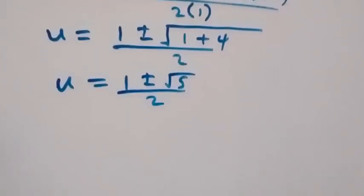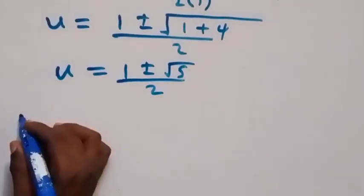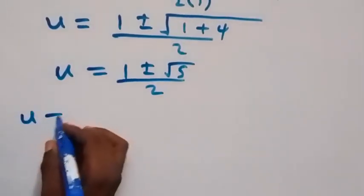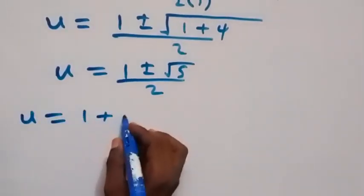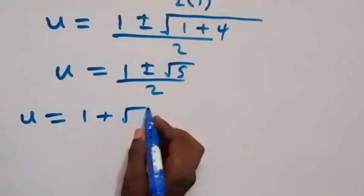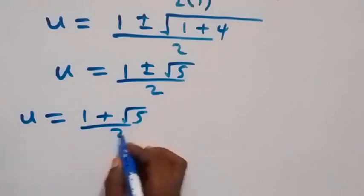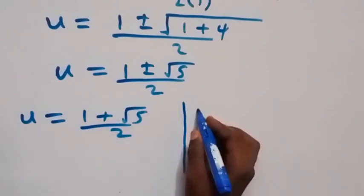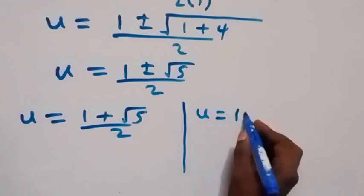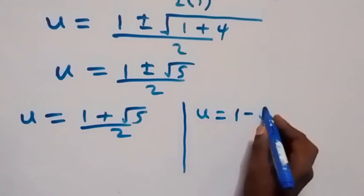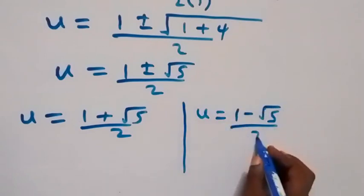This gives two possible cases. We have u equals 1 plus root 5 over 2, or we have u equals 1 minus root 5 over 2.